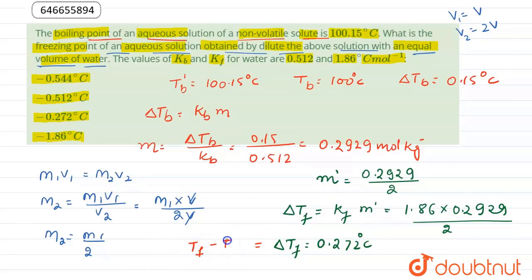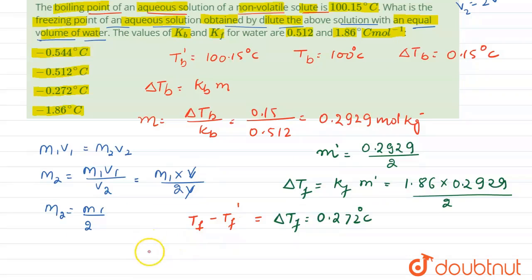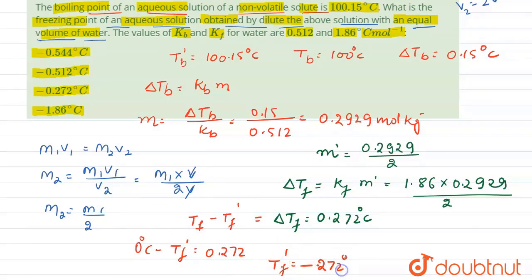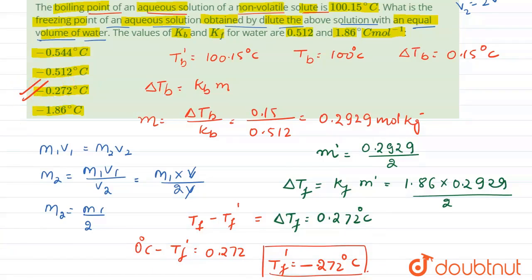Now ΔTf = Tf − Tf', where Tf is the freezing point of pure solvent, i.e., water, which is 0°C. So 0°C − Tf' = 0.272, giving Tf' = −0.272°C. This is the freezing point of the solution, so the correct option is option C: −0.272°C.